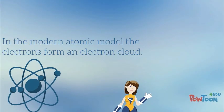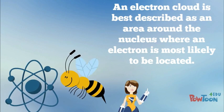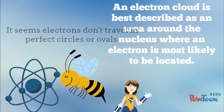In the Modern Atomic Model, the electrons form an electron cloud. An electron cloud is best described as an area around the nucleus where an electron is most likely to be located.